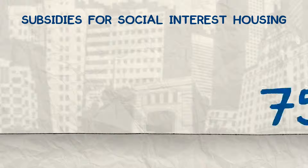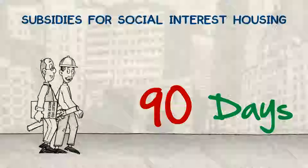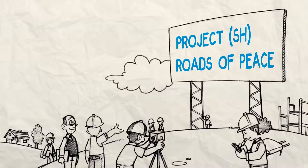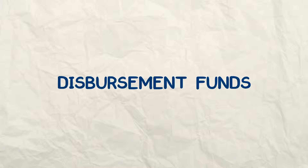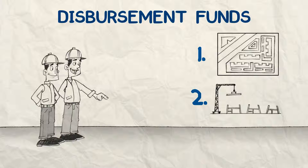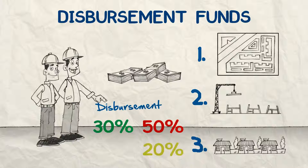This process takes less than 90 days. Once you fulfill the time and procedure requirements, you can begin to build your houses. Then the resources will be dispersed in installments of 30, 50, and 20 percent.